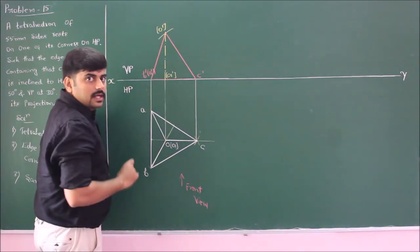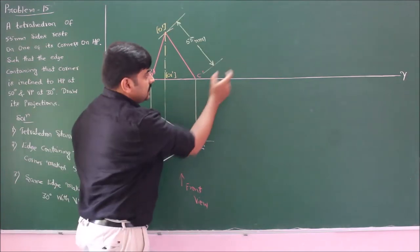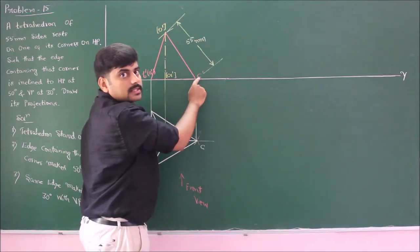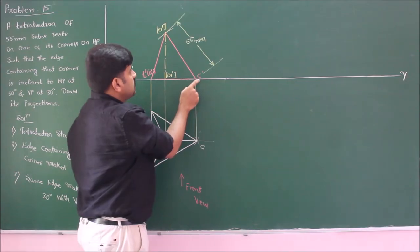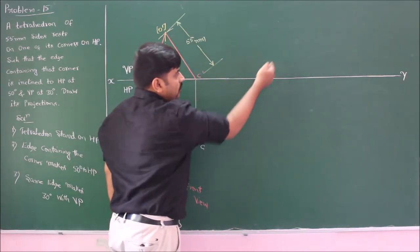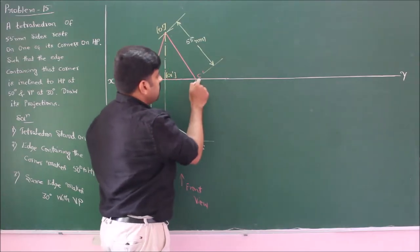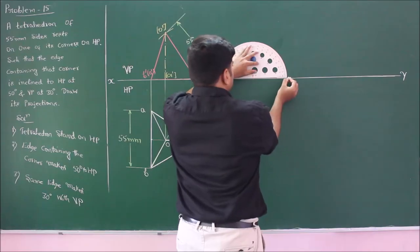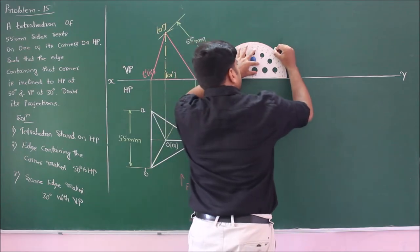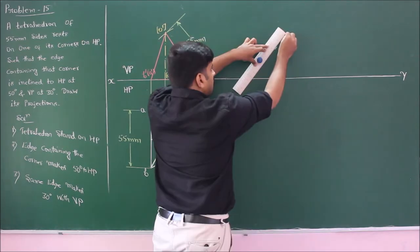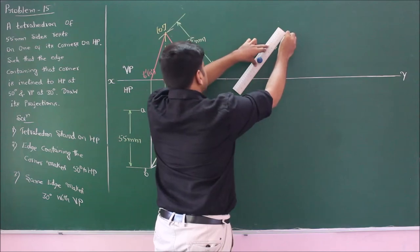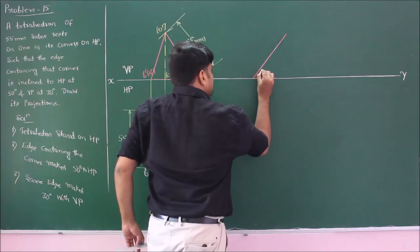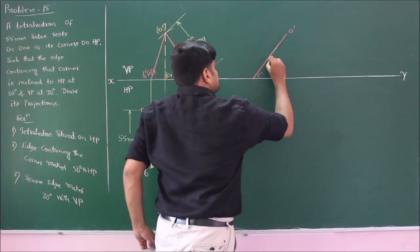In the second position, reconstruct edge C-prime O-prime inclined at 50 degrees to the horizontal plane. Using a protractor, mark 50 degrees counterclockwise and reconstruct edge C-prime O-prime, which has a true length of 55 mm, inclined to HP at 50 degrees.